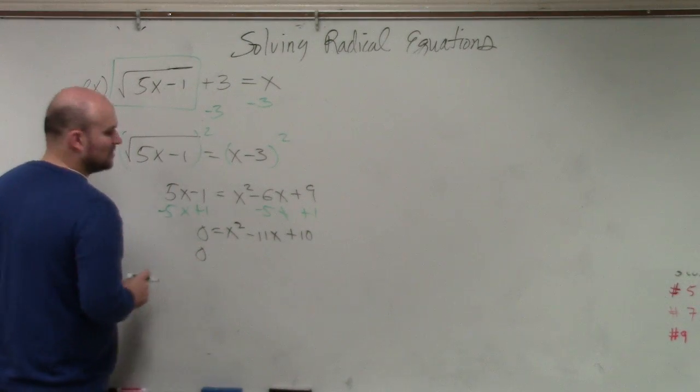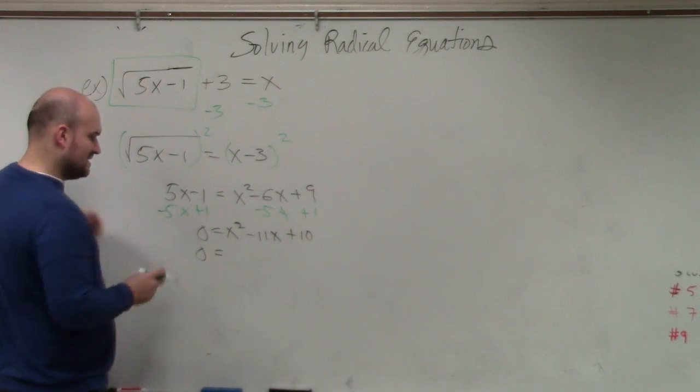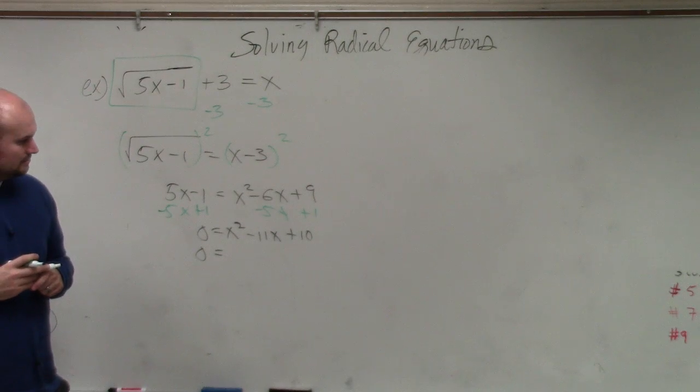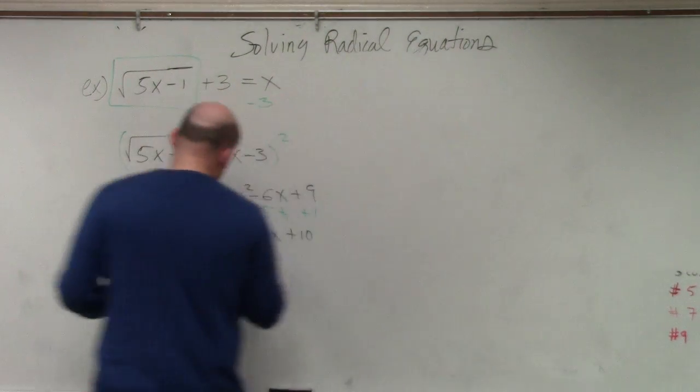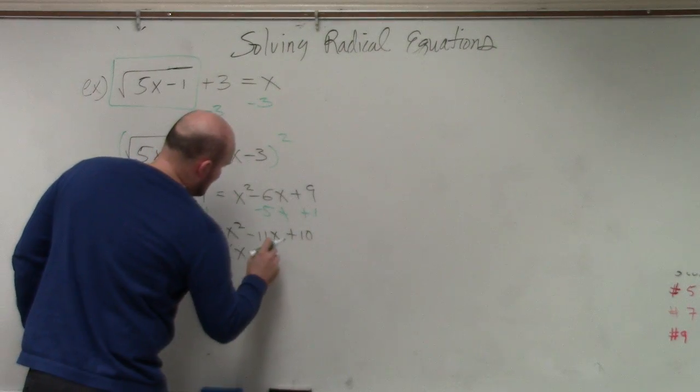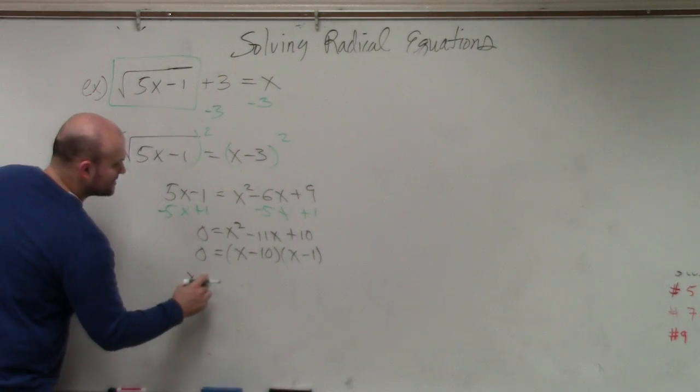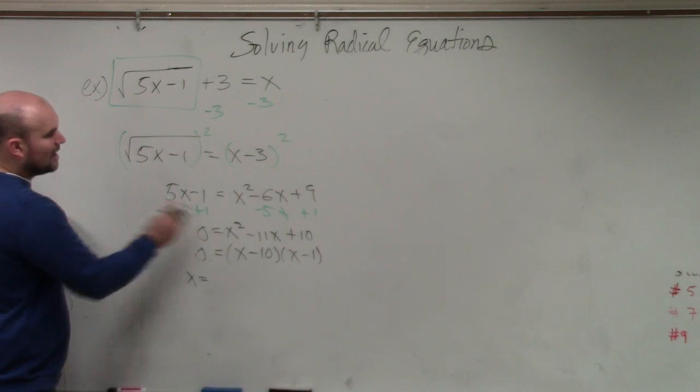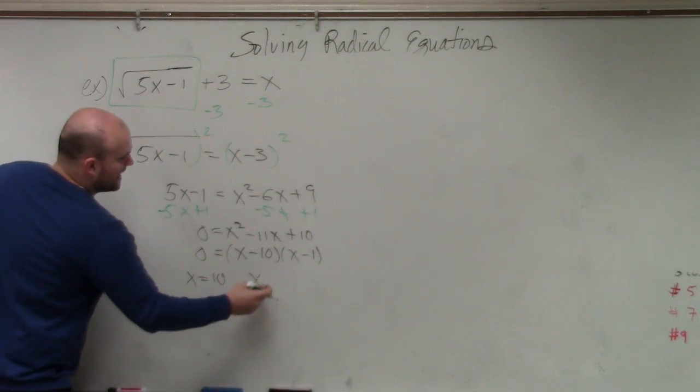Now I need to figure out what two numbers multiply to give me 10, add to give me negative 11. So therefore, I get x minus 10 times x minus 1. So therefore, my solutions, when I apply the 0 product property, I'm trying to go a little bit quick for class. When I apply the 0 product property, I get x equals 10 and x equals 1.